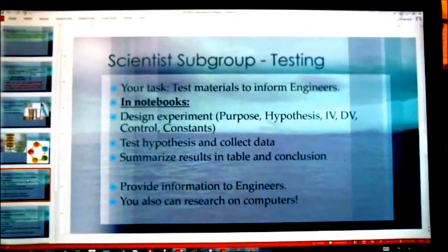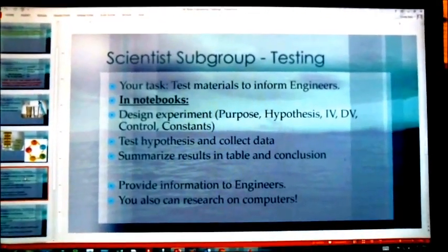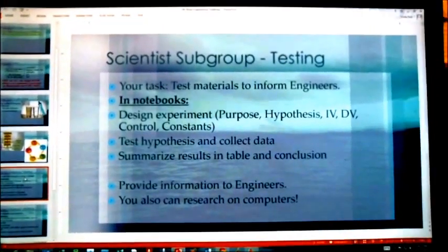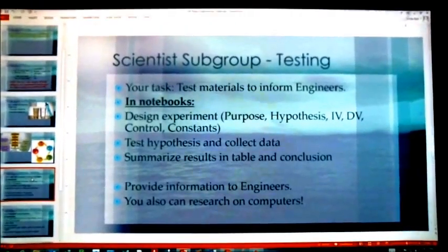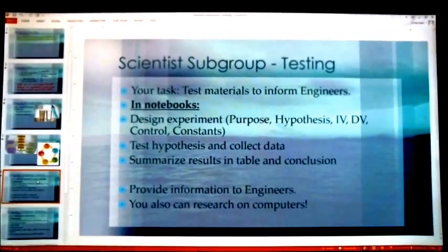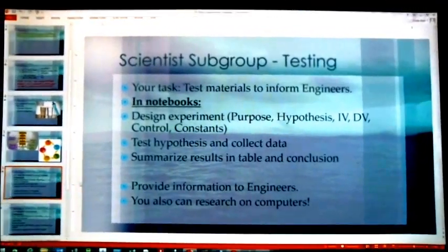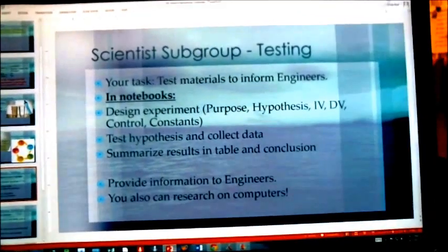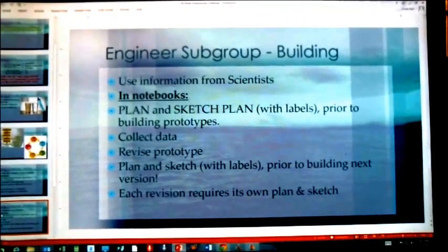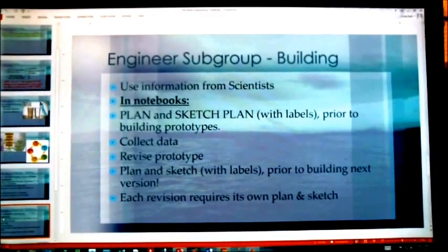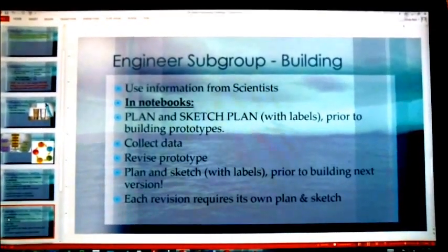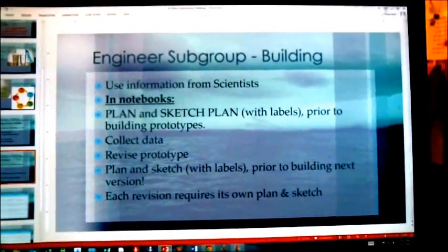This is the information for the scientist subgroup. They had to test different materials for the life straw — materials such as sand, charcoal, vermiculite, and other substrates — then inform the engineering subgroup. With that information, the engineers would plan and sketch their prototypes, test them, and they had to test a total of three prototypes.